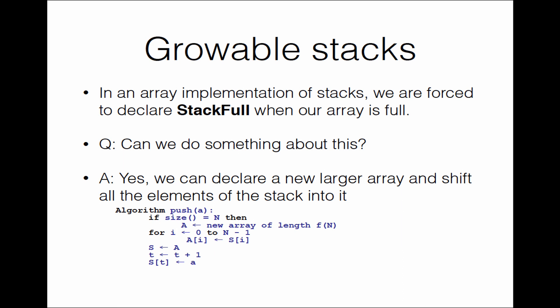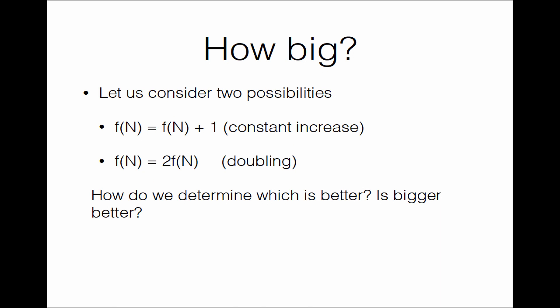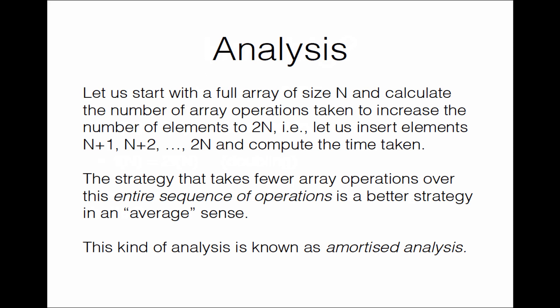The question is: how big should this new array be? Let us consider two possibilities. In the first case, we increase the size of the array by one, or any constant — we will look at constant one, though the analysis works for any constant. In the other case, the size of the new array is double the size of the previous array — in other words, if the size was n, we now have 2n, which is an order-n increase.